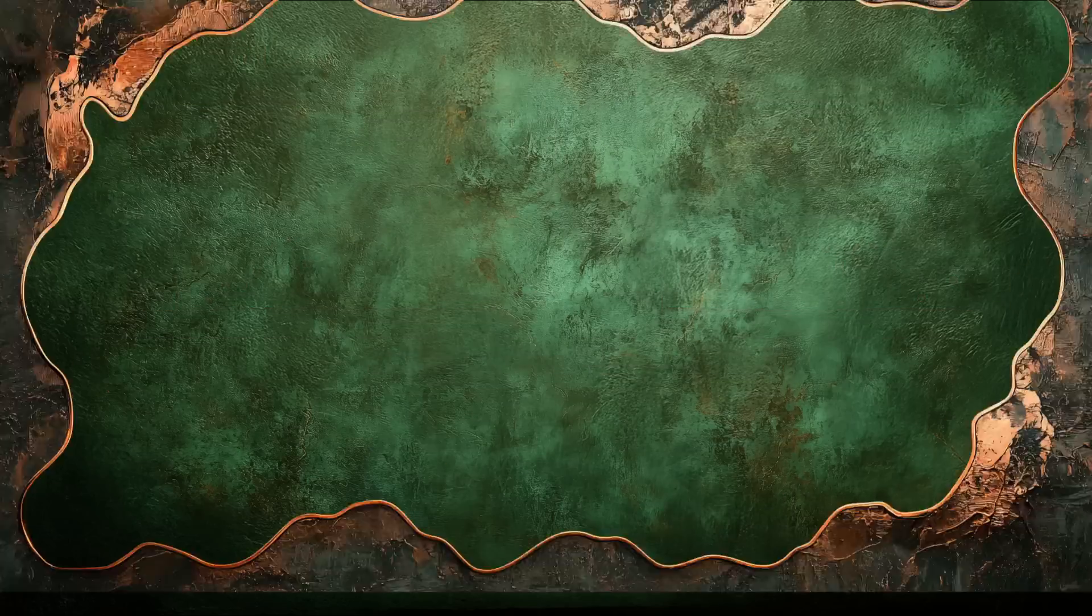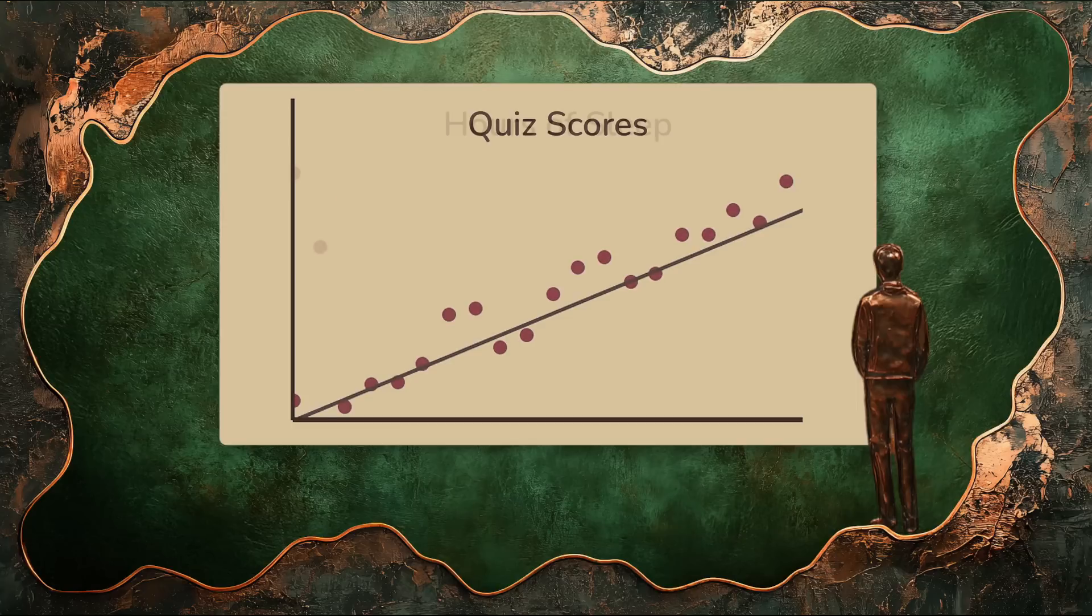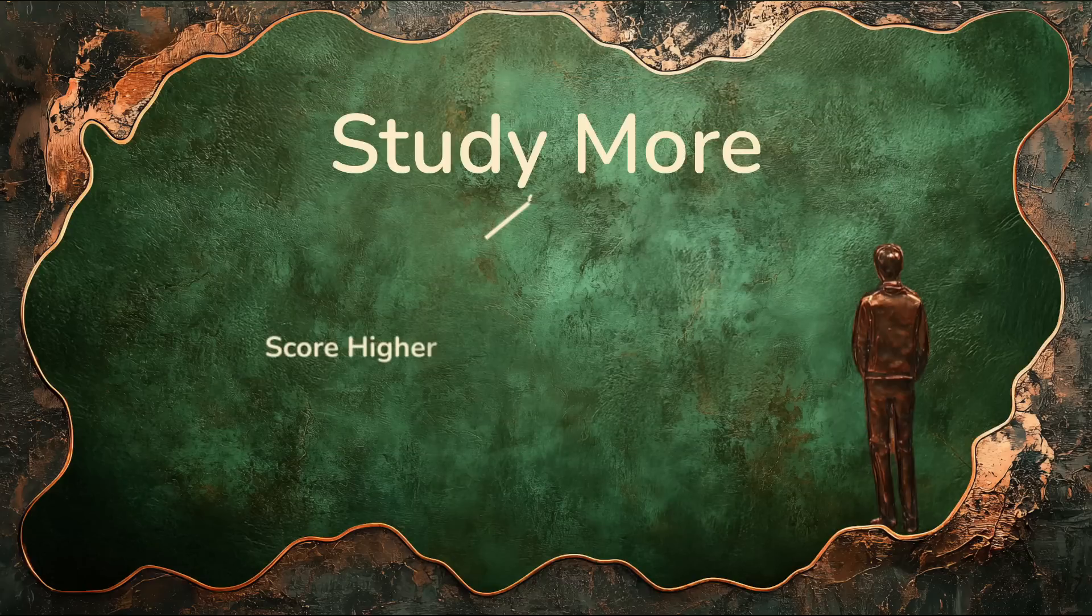So in the case of our friend Logan, his study time and quiz scores have a positive covariance. But sadly, the covariance between his study time and hours of sleep is negative. Now in Logan's example, the relationships are clear. Study more, score higher, study more, sleep less.